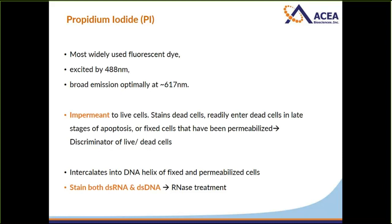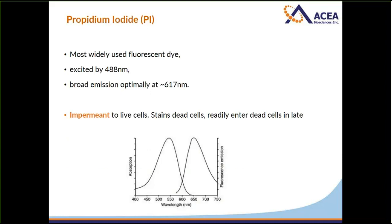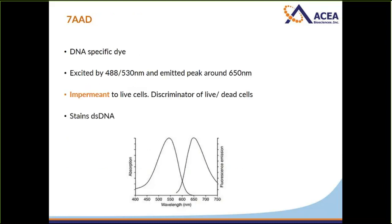The other commonly used dye is 7AAD. This is DNA-specific, meaning you do not need RNase treatment. It is excited at 488 nm or 530 nm, with an emission peak at approximately 650 nm. It is impermeant to live cells, so you need to fix and permeabilize cells before DNA staining. Alternatively, 7AAD can be used as a live/dead discriminator.